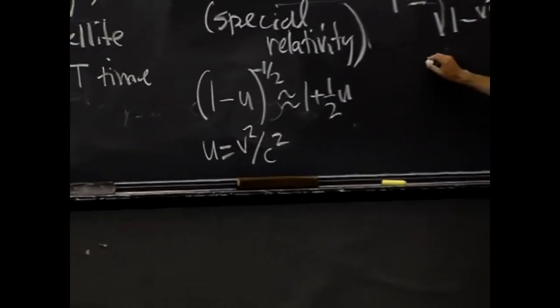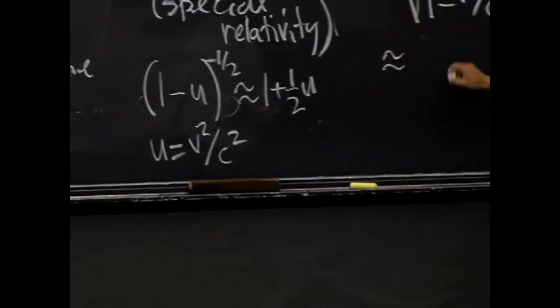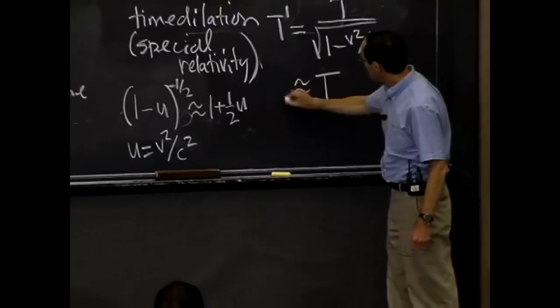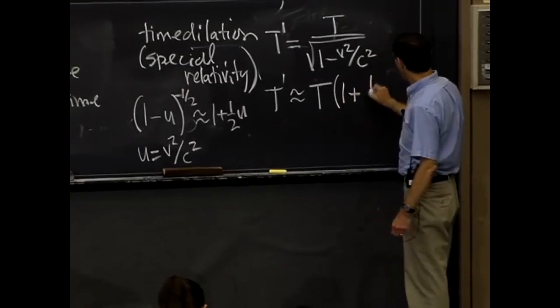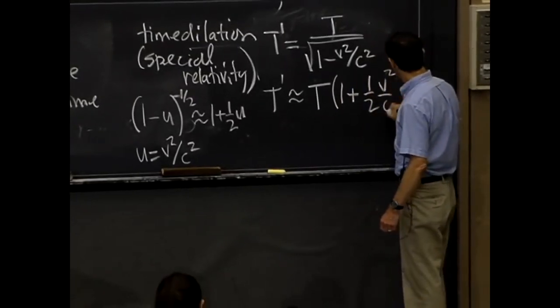So this is approximately, by the same rule, this is t. t' is approximately t times 1 plus 1 half v squared over c squared.